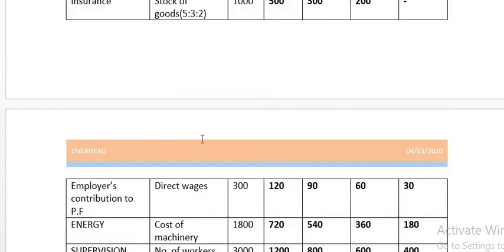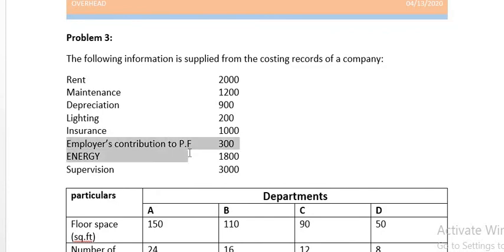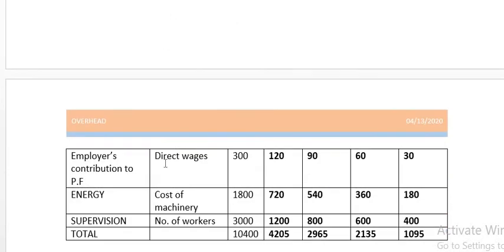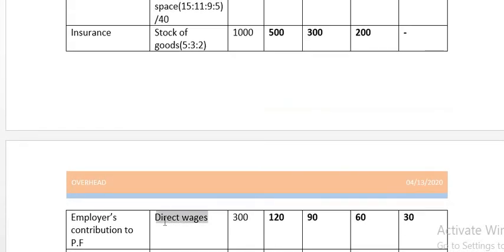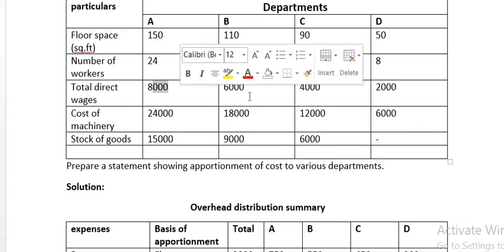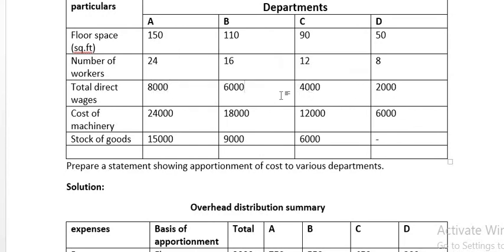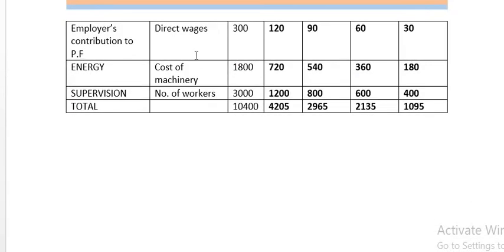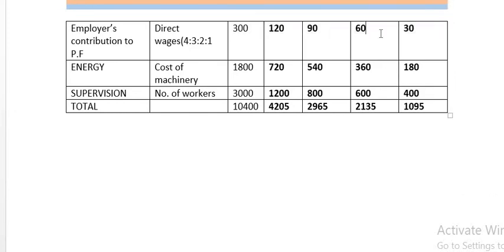Employees' contribution to the PF amounts to 300 and is distributed on the basis of total wages. The total wages are 8,000, 6,000, 4,000, and 2,000. Removing the zeros, the ratio is 4:3:2:1 with a total of 10. So 300 is distributed as: 120, 90, 60, and 30 to the four departments.